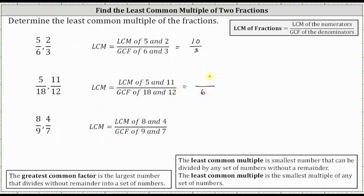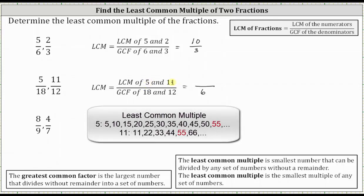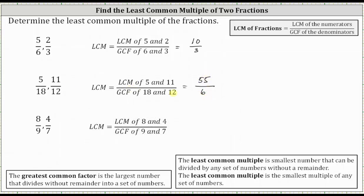The numerator is the least common multiple of five and 11, which is the smallest number that can be divided by both five and 11. Since five and 11 only share a common factor of one, five times 11, or 55, is the least common multiple of five and 11. This means 55/6 is the least common multiple of 5/18 and 11/12 — the smallest fraction divisible by both, and also the smallest multiple of both fractions.